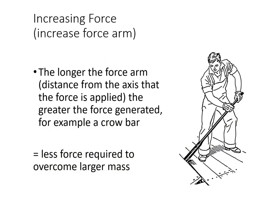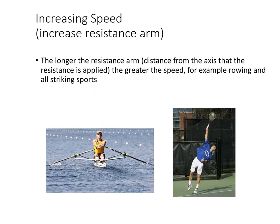To generate greater force, we deliberately increase the force arm. If you choked down on a crowbar you'd struggle to pry up a floorboard, so elongating the force arm — the distance from where force is applied to the axis — generates greater force. Conversely, deliberately increasing the resistance arm won't give a mechanical advantage for force, but allows a massive range of motion and much greater speed.